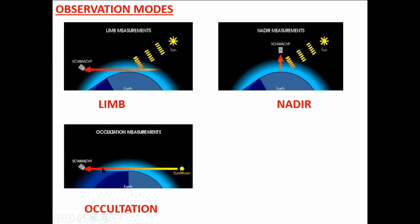We also have the occultation mode. The occultation is, in a way, not so different from the limb, because it also picks information tangentially to the Earth. However, unlike the limb, this mode has the satellite facing directly the source of light — which in this case is the sun or the moon — giving us solar occultation and lunar occultation modes. Some radiation gets directly into the satellite in a more straight-line form. The key difference is that the source of incident light is directly facing the satellite.